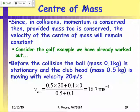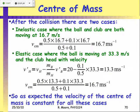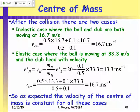We revisited the golf club and ball example from earlier and showed that the velocity of the center of mass before the collision equals the velocity of the center of mass after the collision — even though we weren't considering that at the time. And it didn't matter what type of collision — elastic, inelastic — makes no difference. The velocity of the center of mass is still the same.